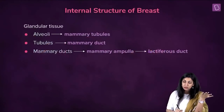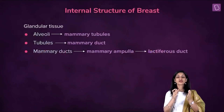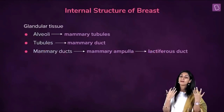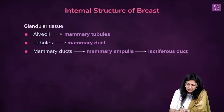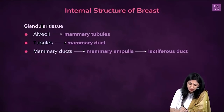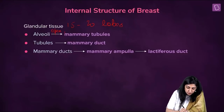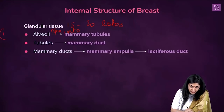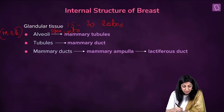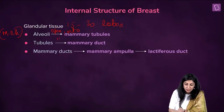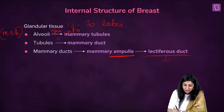Let's revise once more. Glandular tissue is arranged in 15 to 20 mammary lobes. Mammary lobes have alveoli — the site of milk production. Alveoli open into mammary tubules; mammary tubules open into mammary ducts; mammary ducts open into ampulla; ampulla opens into lactiferous duct; lactiferous duct opens at the nipple outside.